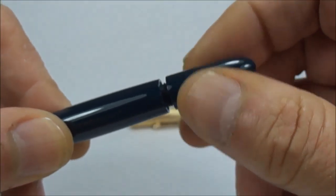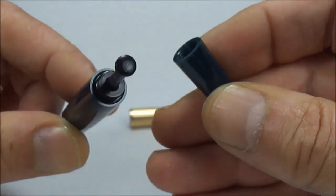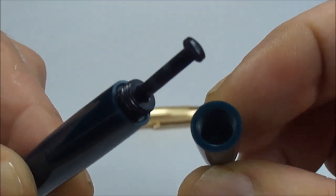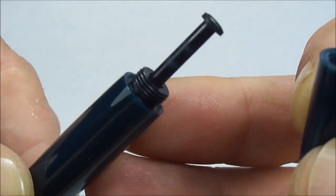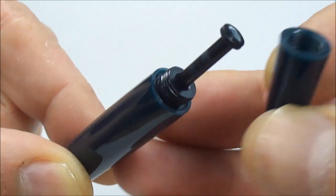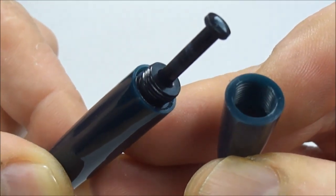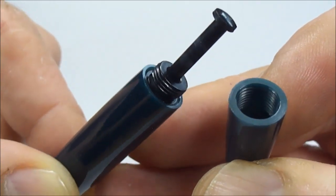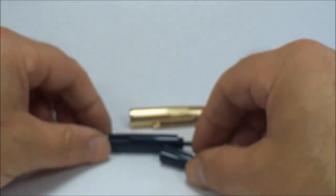Now, as we said, it's a vacuumatic pen, which means what we do is simply unscrew the blind cap like so. And you can see it's got this plastic pump filler to the end of the barrel there.